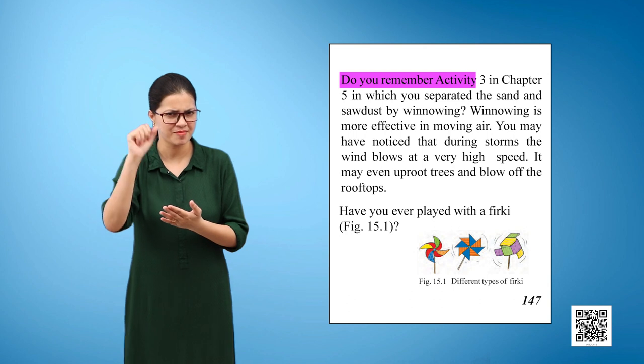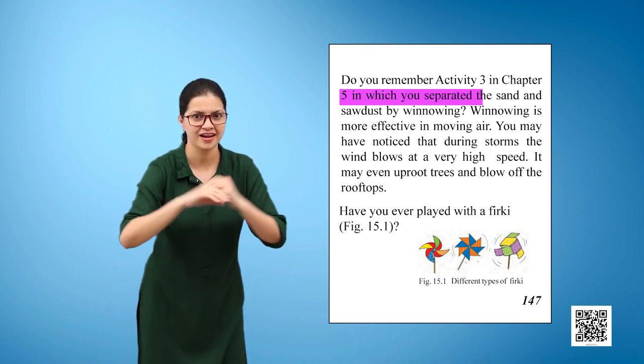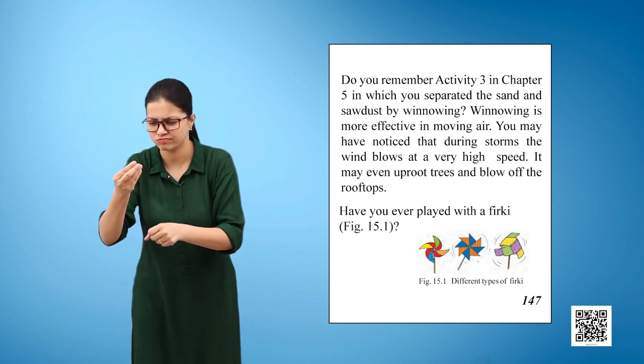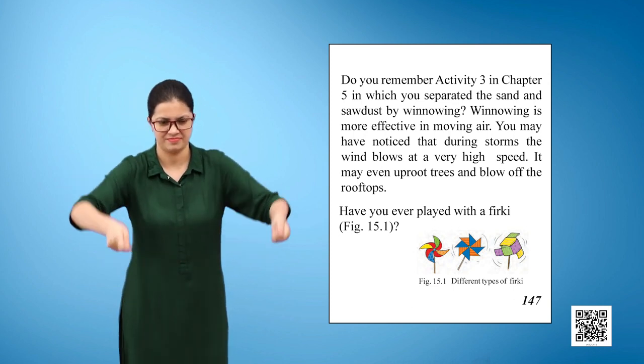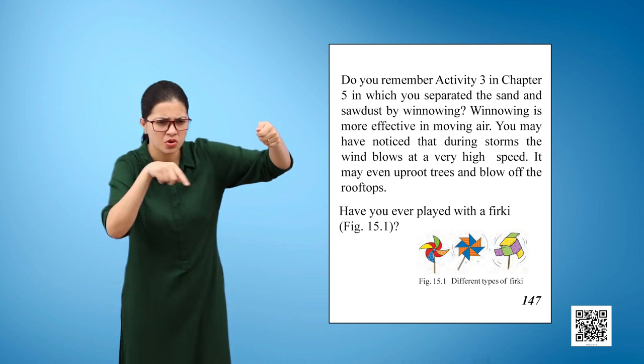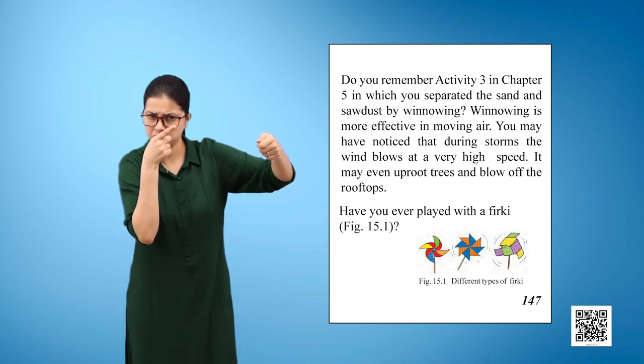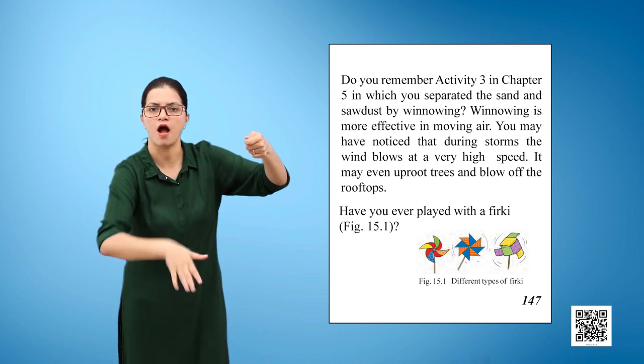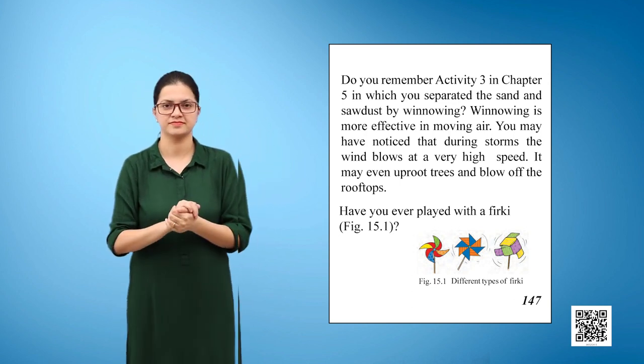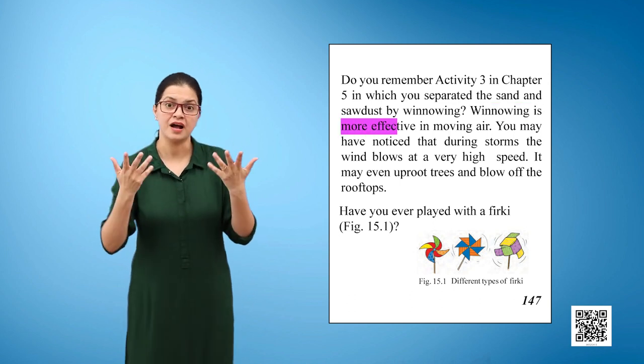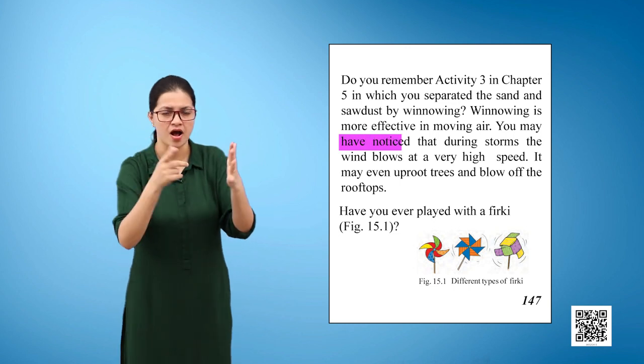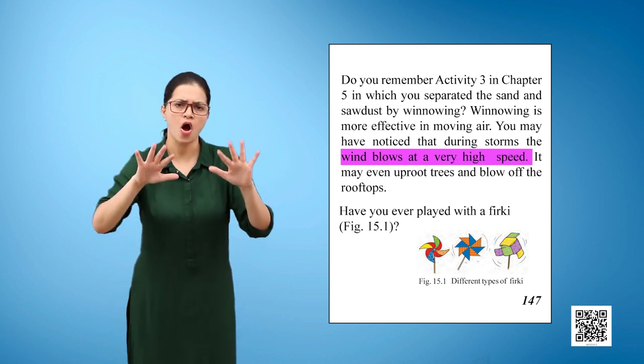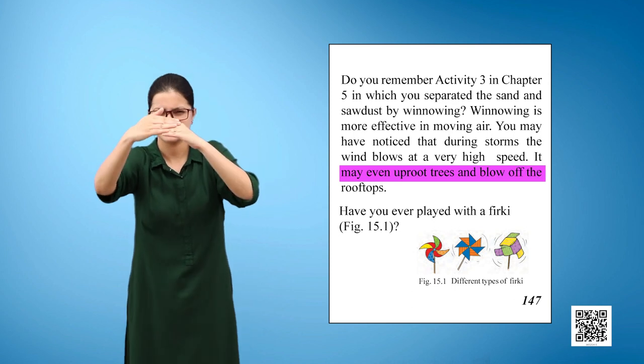The moving air makes it possible for you to fly your kite. Do you remember Activity 3 in Chapter 5, in which you separated sand and sawdust by winnowing? Winnowing is more effective in moving air. You may have noticed that during storms the wind blows at a very high speed. It may even uproot trees and blow off rooftops.